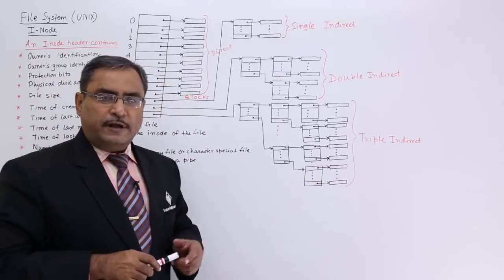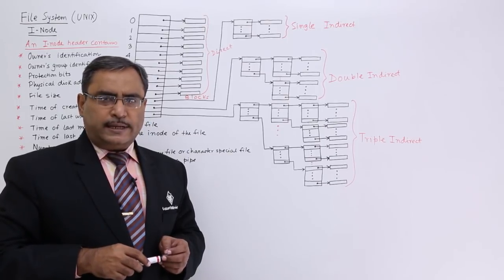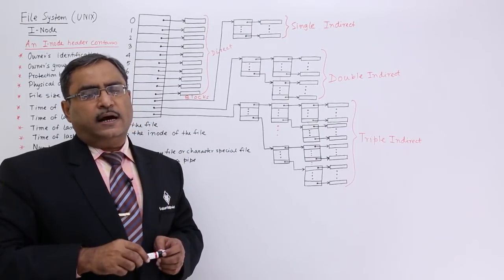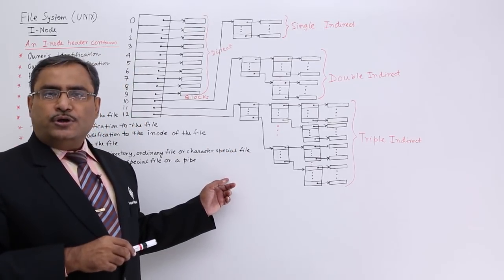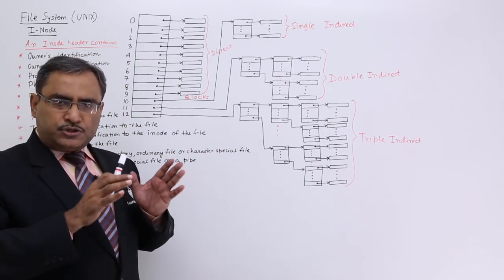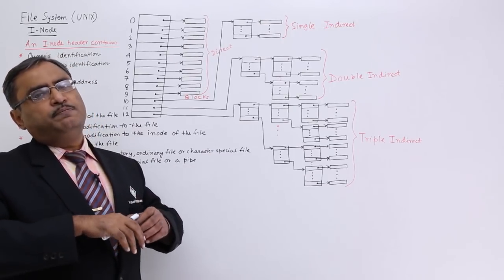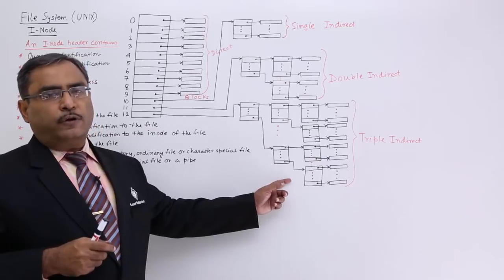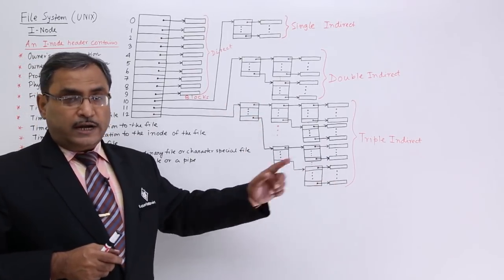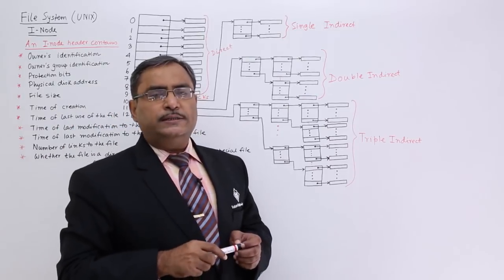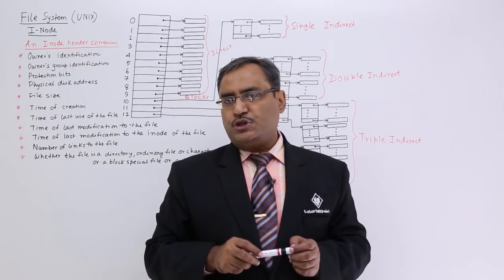In this way, file systems are represented in Unix. Smaller file sizes are more common and appreciable in Unix operating system, and this data structure is designed to efficiently store small file size contents. If file sizes are large, triple indirect addressing must be used, which is a time-consuming process — so smaller file sizes are preferred.